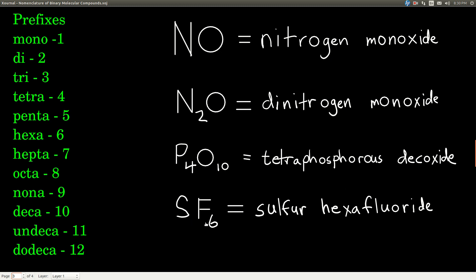Here, one sulfur, six fluorines. Sulfur and fluorine are both non-metals. We do not use a mono for the sulfur. So we just say sulfur hexafluoride.